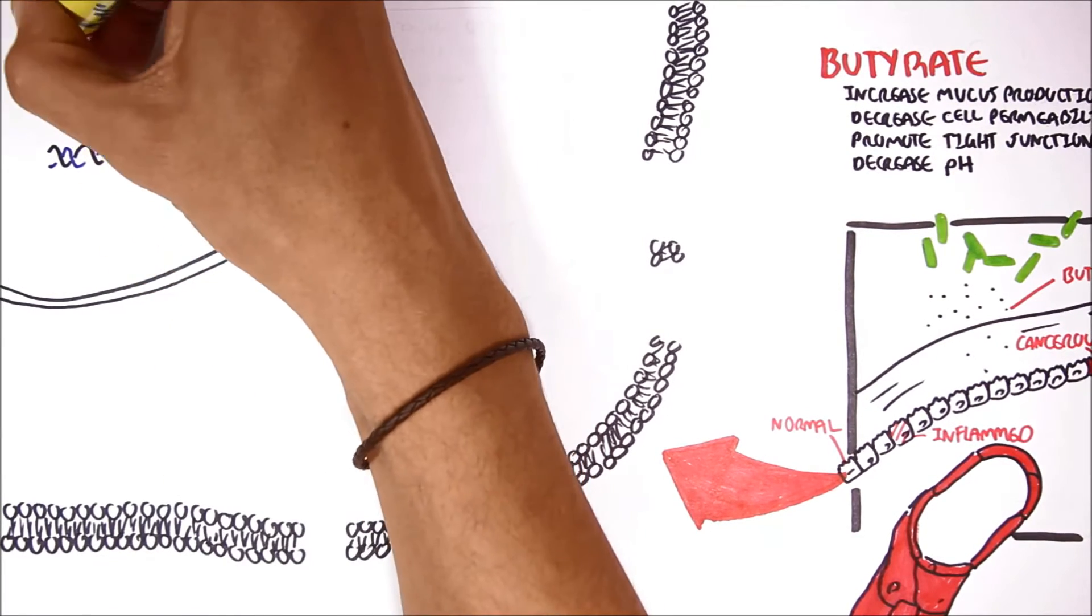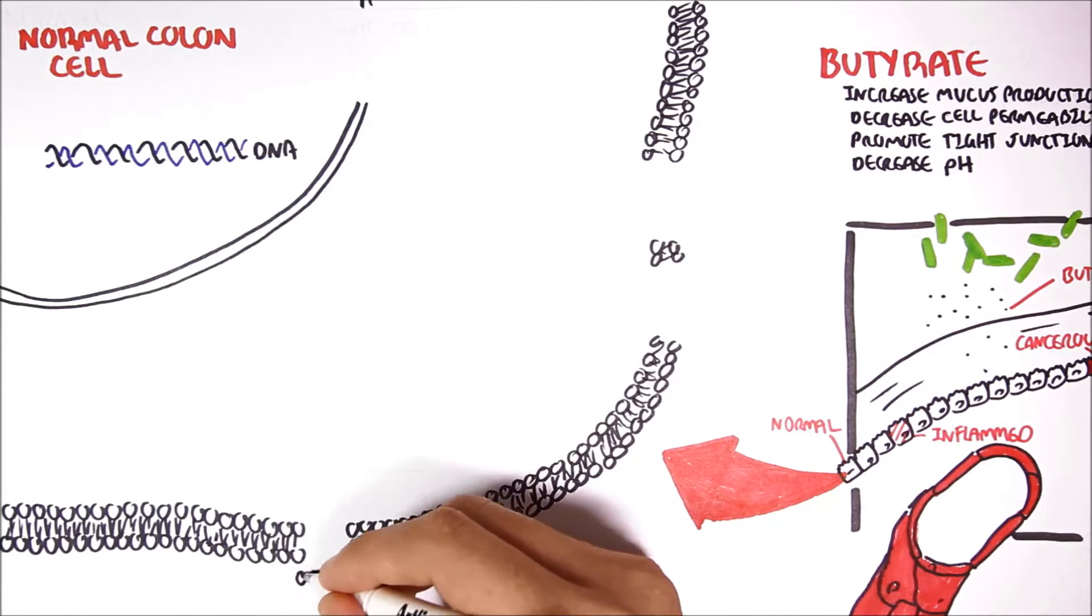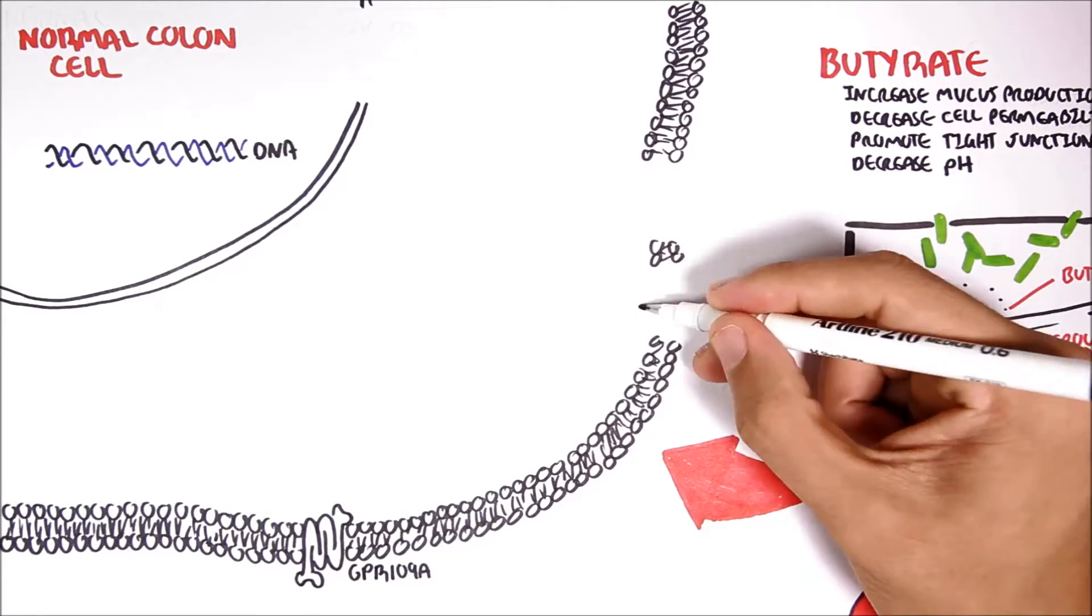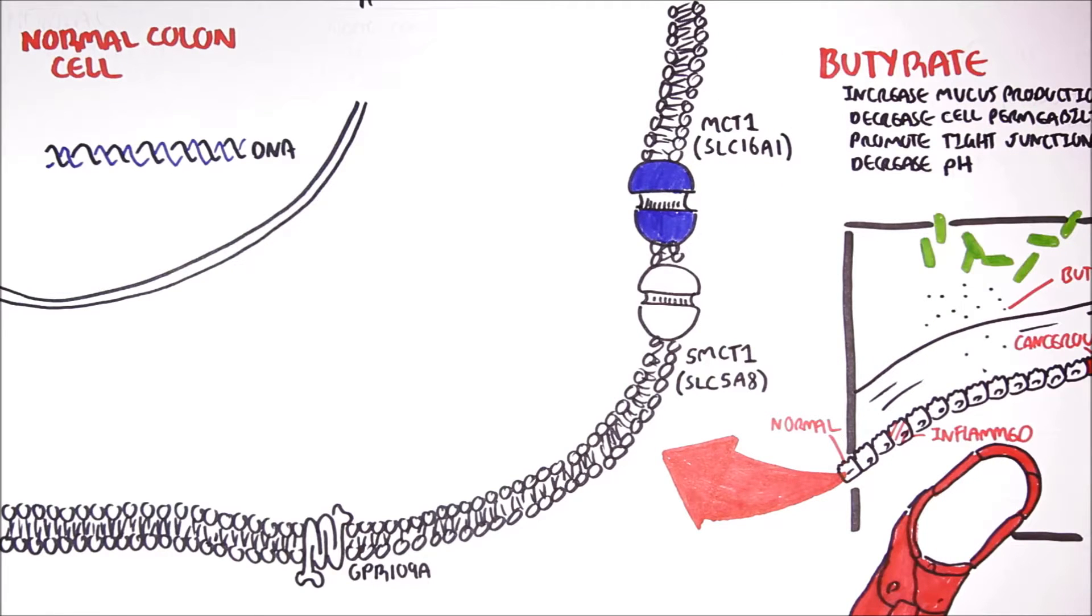The colon cell's plasma membrane, as well as on other cell membranes, there are a variety of short-chain fatty acid receptors and transporters. Butyrate elicits its effects through the G-protein receptor 109A and G-protein receptor 41 and 43, which I have not drawn, and can be transported inside the cell through the monocarboxylate transporter 1, MCT1, and the sodium monocarboxylate transporter 1, SMCT1.